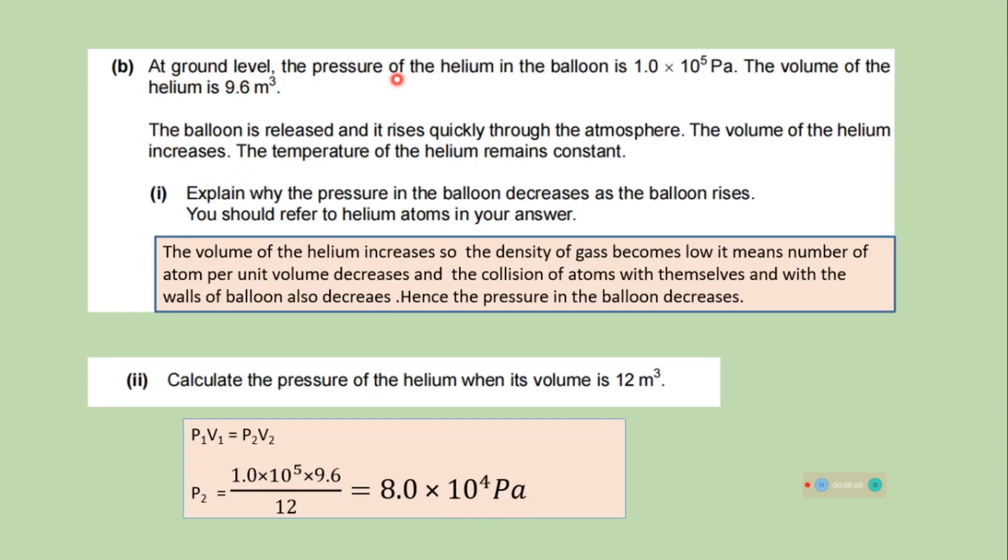At ground level, the pressure of the helium in the balloon is given. The volume of the helium is given. The balloon is released and it rises quickly through the atmosphere. The volume of the helium increases. The temperature of the helium remains constant. So it is given the temperature is constant and volume increases. Explain why the pressure in the balloon decreases as the balloon rises. You should refer to helium atoms in your answer. So the volume of the helium increases. So it means the density of the gas becomes low. It means number of atoms per unit volume decreases. And the collision of atoms with themselves and with the walls of balloon also decreases. Hence, the pressure in the balloon decreases.